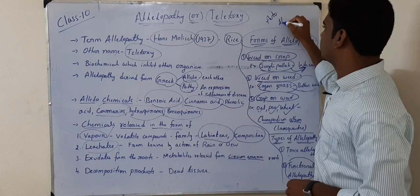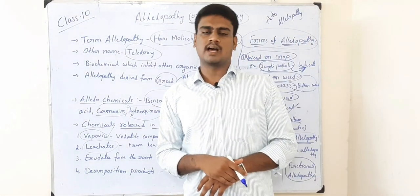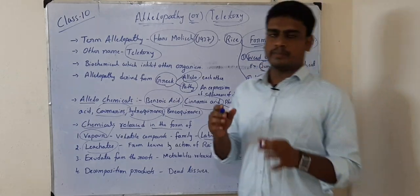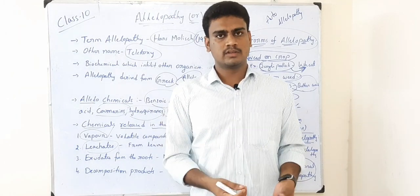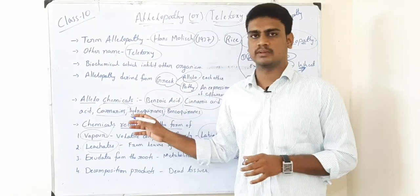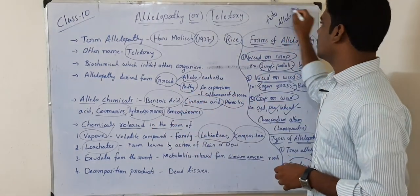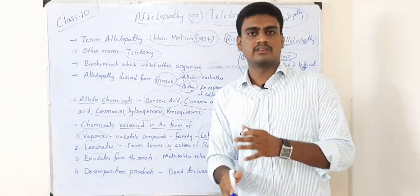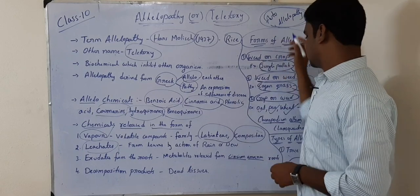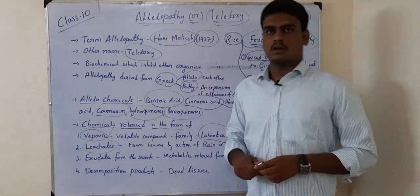There is another type called auto allelopathy. For example, parthenium hysterophorus — also known as congress grass or carrot grass — came from a foreign country. When parthenium releases seeds and they fall on the soil, new plants called daughter plants grow. These daughter plants also release allelochemicals, and those chemicals affect the mother plant. This self-inhibition is called auto allelopathy. This is a separate type and does not fall under the two main types of allelopathy.